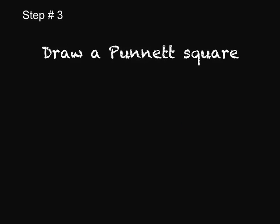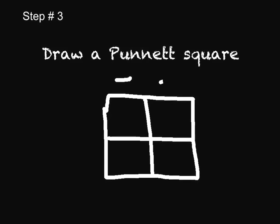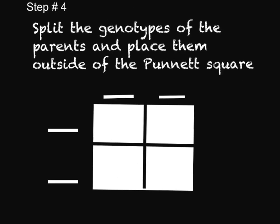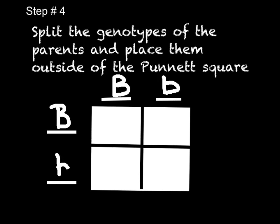The next step is to actually create the Punnett square. It is usually a box divided into four, so that one parent goes here and another parent goes there. You are going to split the genotypes — we had a hybrid, so one of the letters goes in one box, the other letter goes in the other. You do the same on the side. It does not matter which parent goes on which side, as long as the alleles stay together.